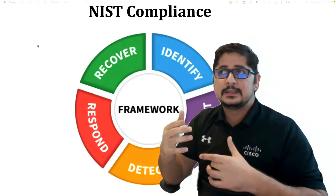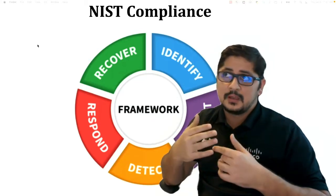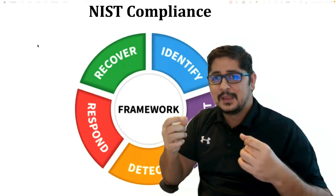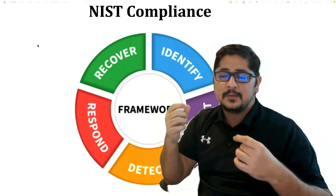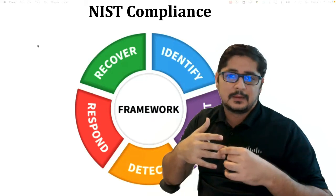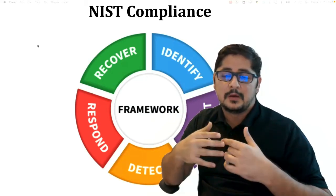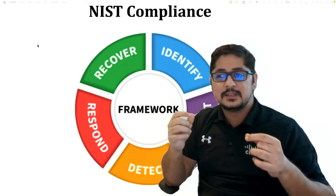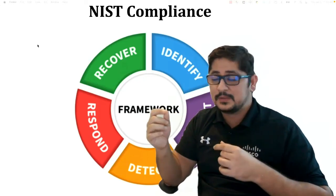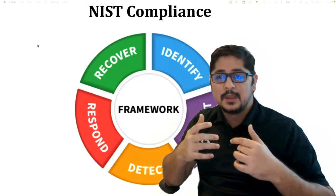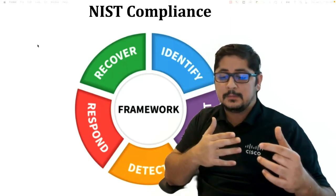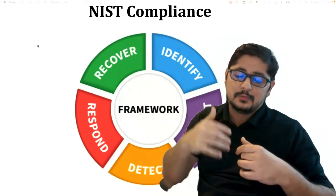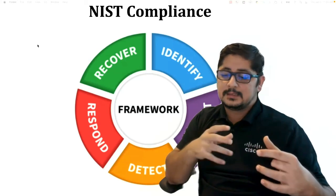In case something goes wrong and someone you don't want to come in tries to enter your home, you have sensors in place that detect the moment someone enters — say at midnight — and they set off an alarm. So then it gets into the response piece: once sensors detect unusual activity, the alarms go off, and they could direct a call to 911 or you manually do that. That's how your response comes into play.